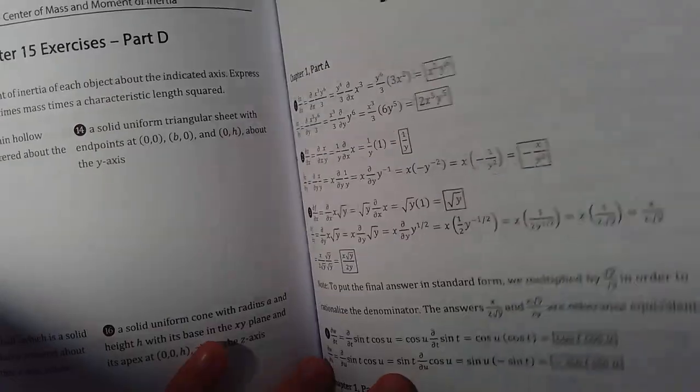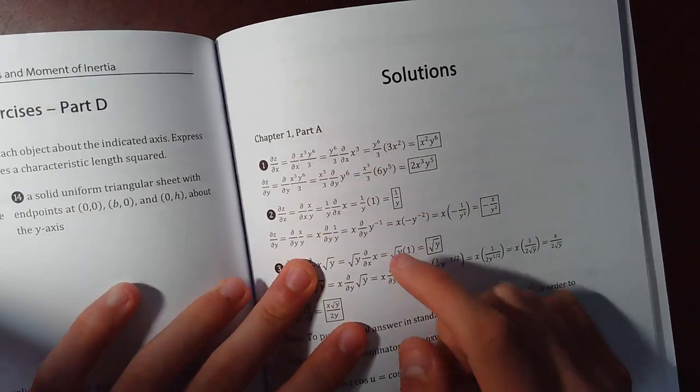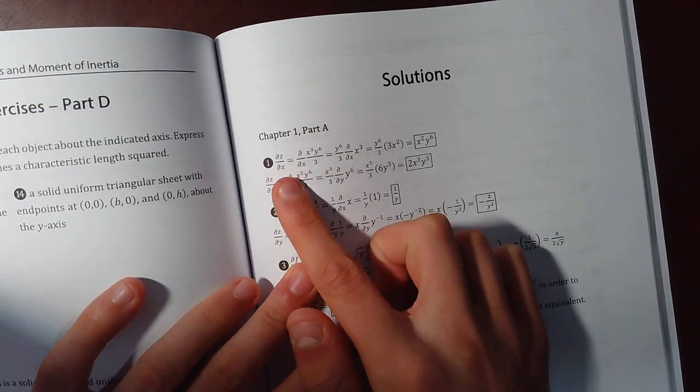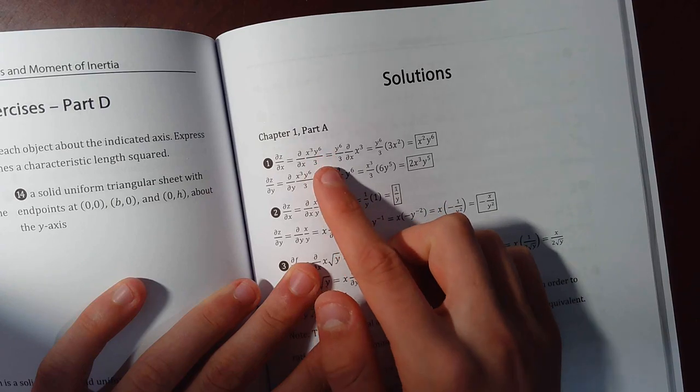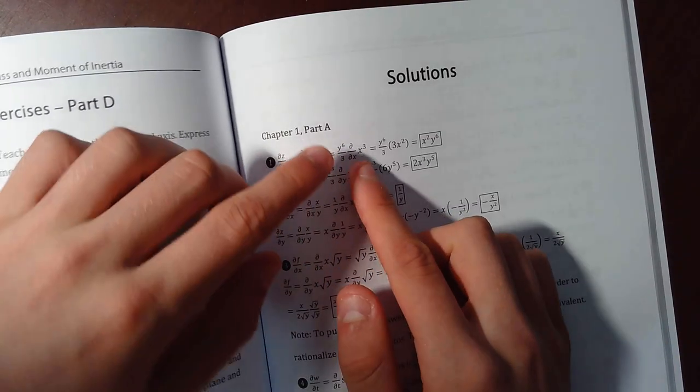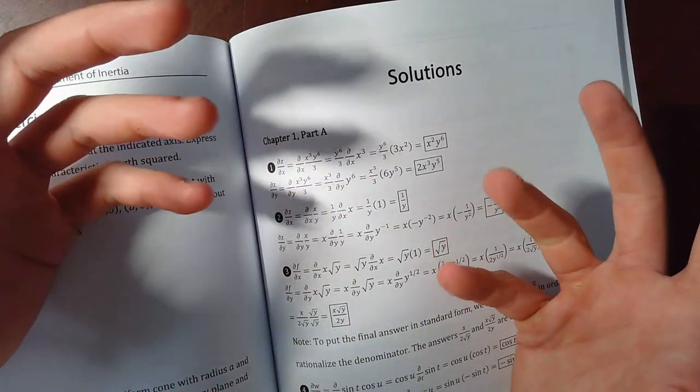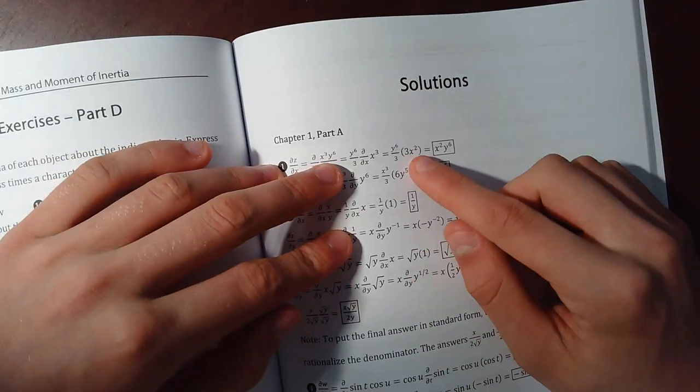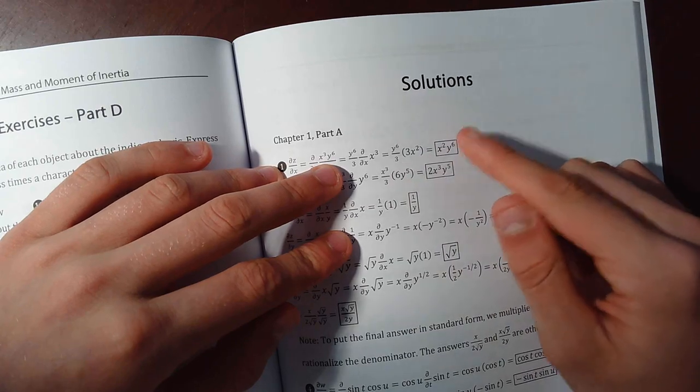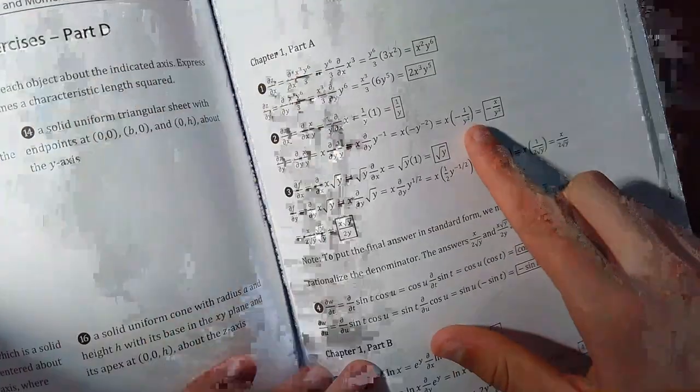Because it's got all the steps there of how to work it out. So they find the partial derivative with respect to z, differentiating this function. Then you're just taking the y to power of 6 and 3 at the front, because it's treated as a constant when you're partially differentiating. And you're just differentiating that bit, and then you get that. It's got all the answers.